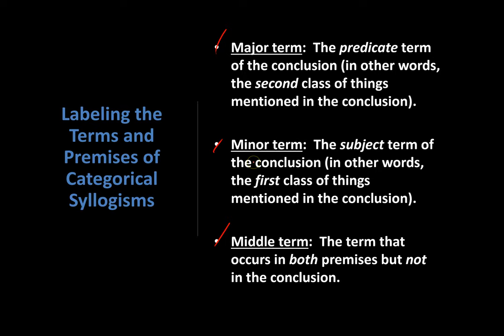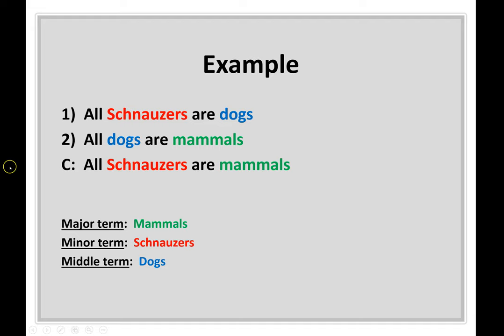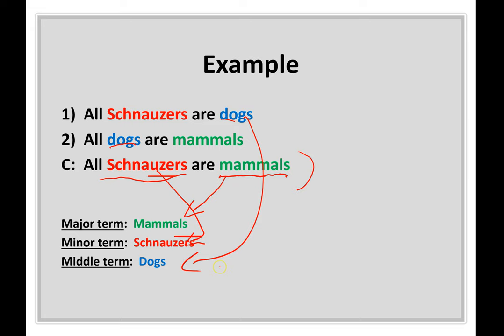Let's apply it: all schnauzers are dogs; all dogs are mammals; therefore all schnauzers are mammals. Find the conclusion. The second group of stuff mentioned in the conclusion — 'mammals' — is your major term. The first group — 'schnauzers' — is your minor term. The term mentioned in both premises but absent from the conclusion — 'dogs' — is your middle term.